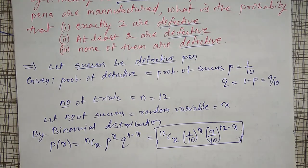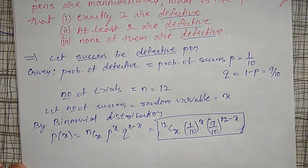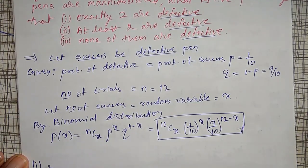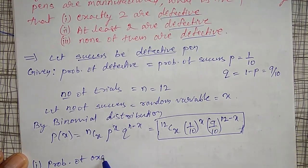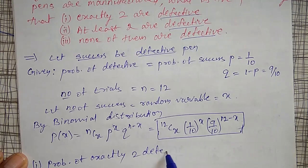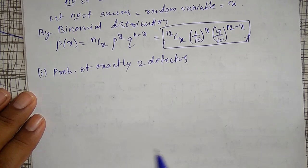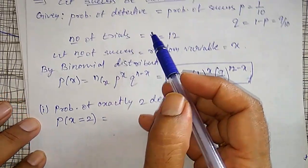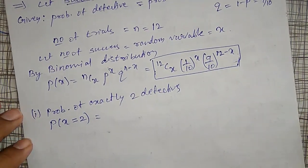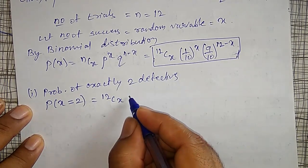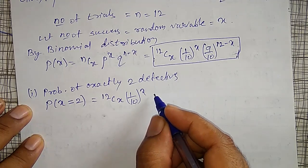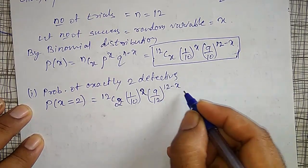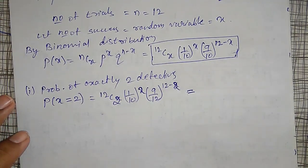The first question is to find the probability of exactly two defectives. That is P(X = 2). Since defective is our success, exactly two defectives means exactly two successes, which equals 12 C 2 multiplied by (1/10) raised to 2 multiplied by (9/10) raised to 12 minus 2. Let me simplify this using the calculator directly.